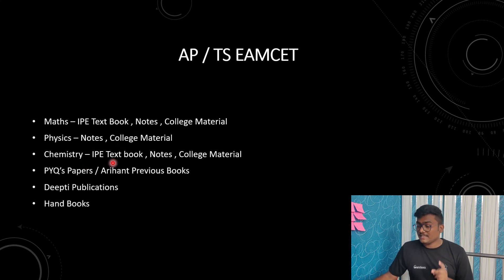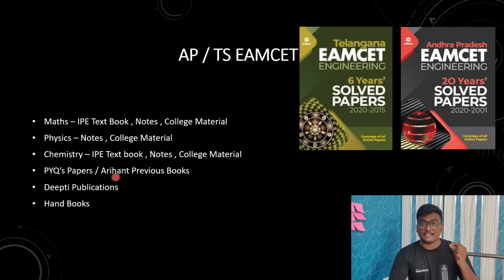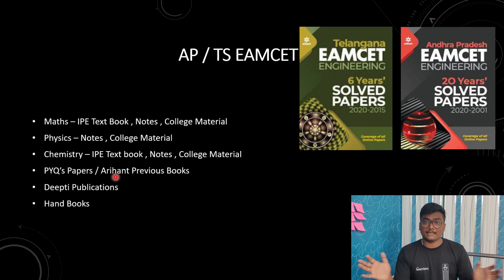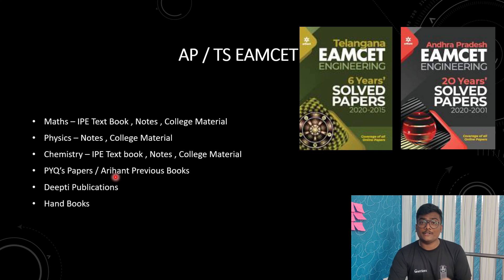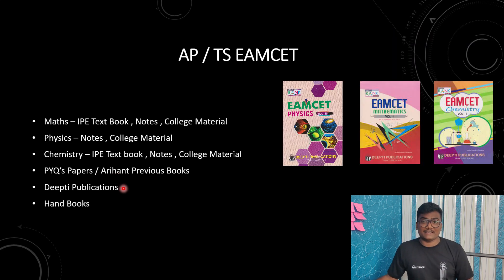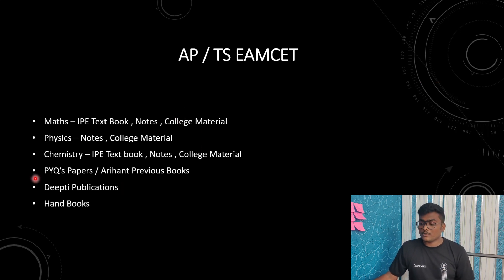For Physics: notes and college material. For Chemistry: IP textbooks, notes, college material, and previous year question papers. Previous year books have chapter-wise and topic-wise questions all gathered in one place — solving those will tell you how fast and accurate you are. Then comes Deep Publications for EAMCET — Deep Publication is a good suggested book, but if you have college material you need not go with Deep Publication. Only go for Deep Publication if you don't have college material.